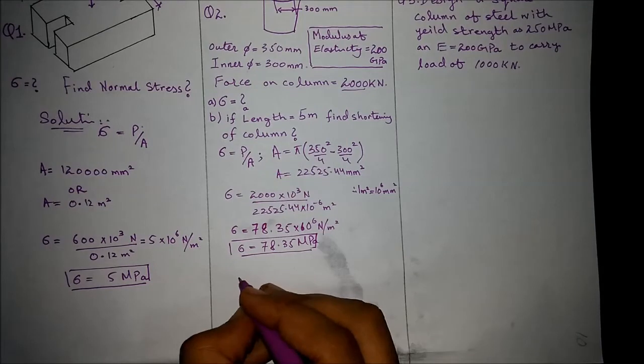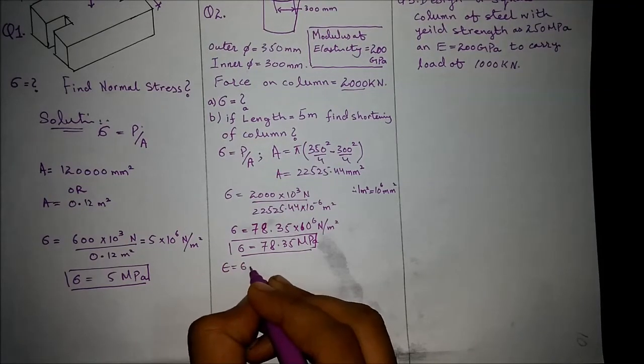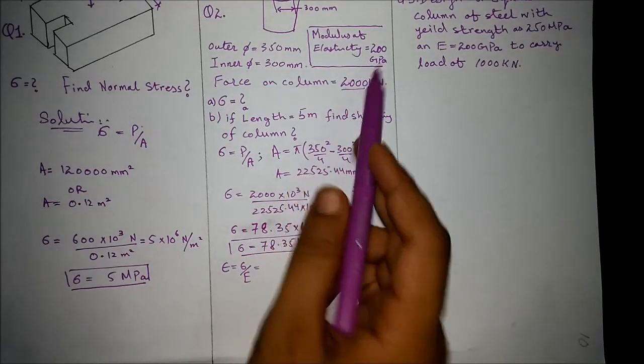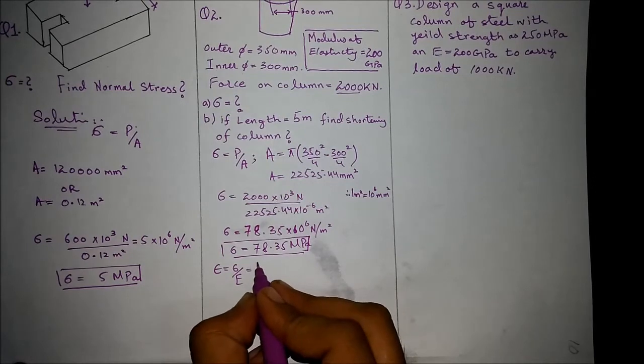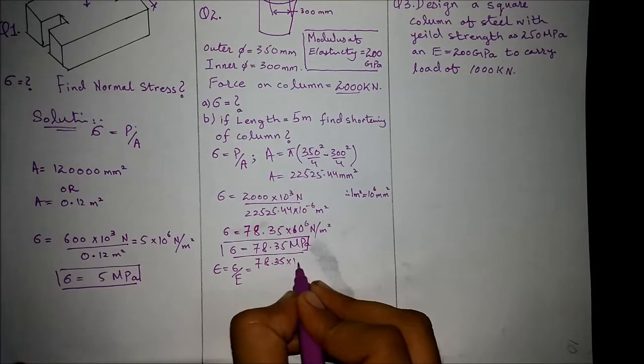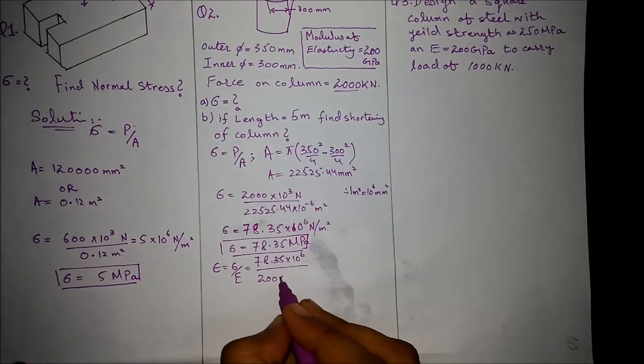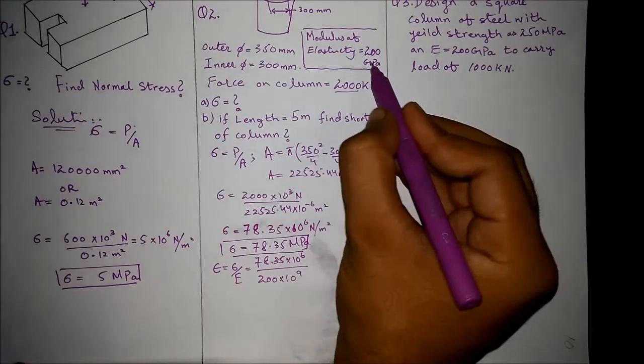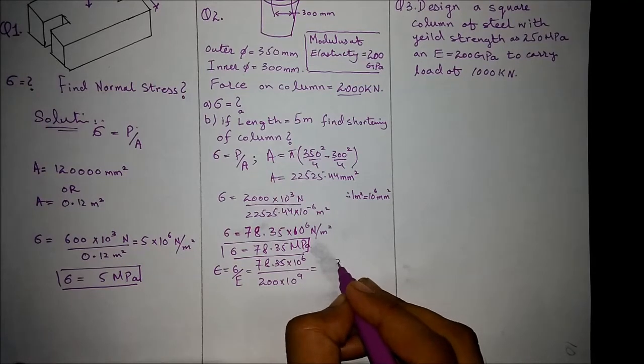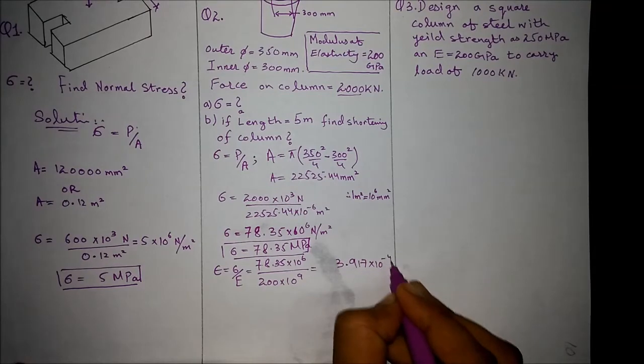For part B, we know that strain equals stress over modulus of elasticity. We are given with modulus of elasticity as 200 gigapascal. So we divide the stress 78.35 times 10^6 by 200 times 10^9. Since gigapascal represents exponent nine, the strain comes out to be 3.917 times 10^-4.